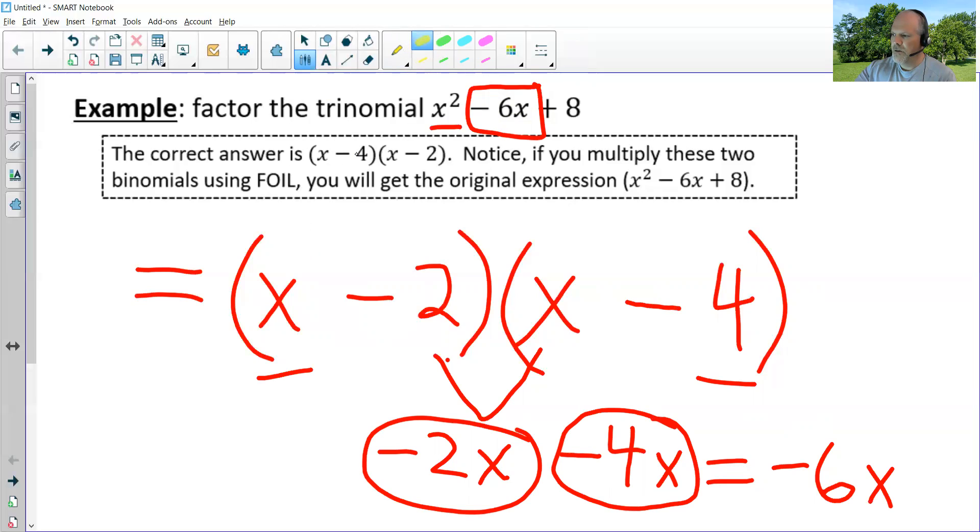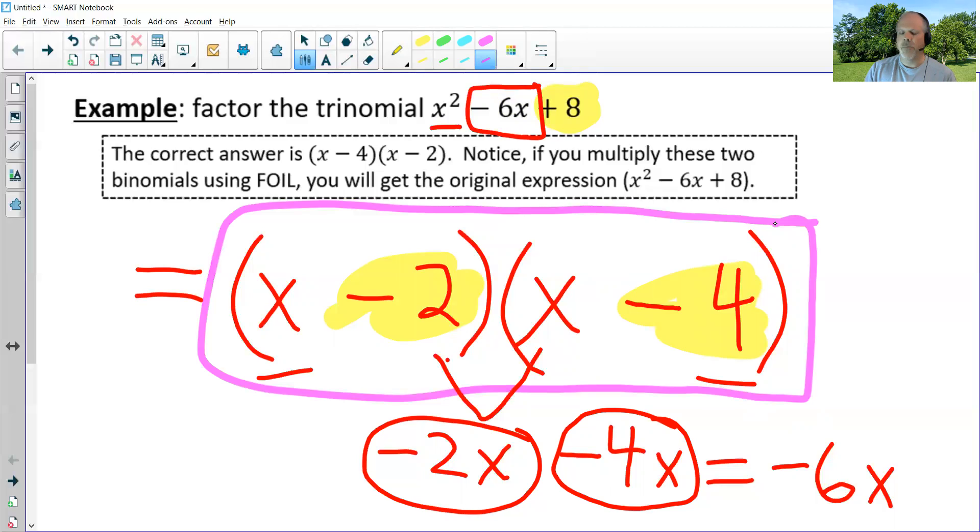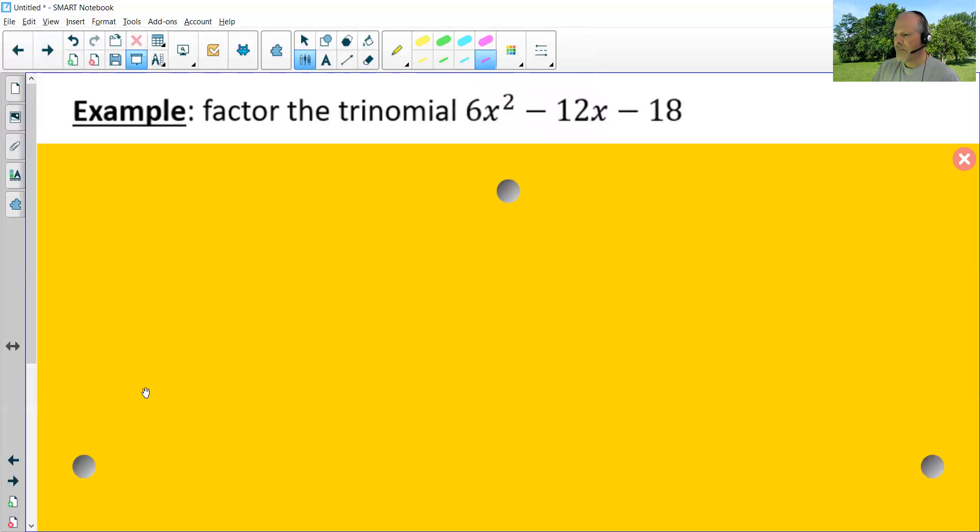Also notice that negative two times negative four equals positive eight. So my correct answer then is x minus two times x minus four. Let's try another one.